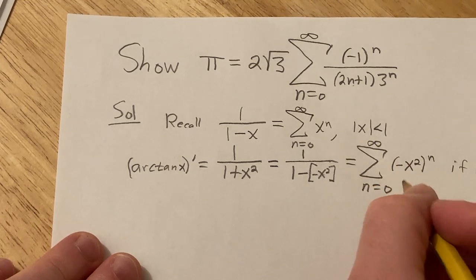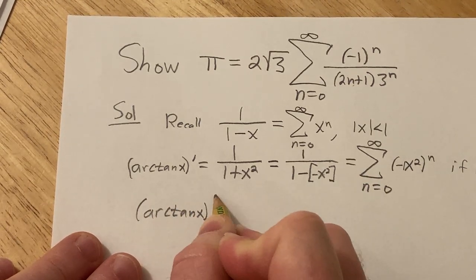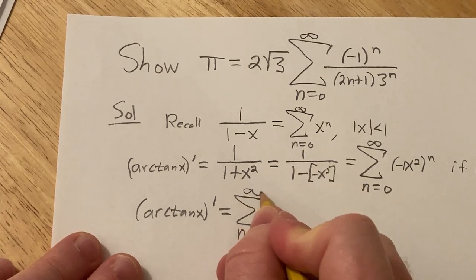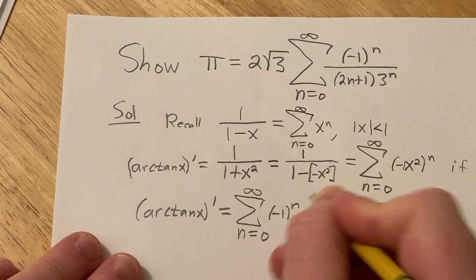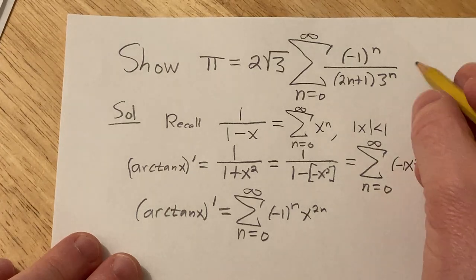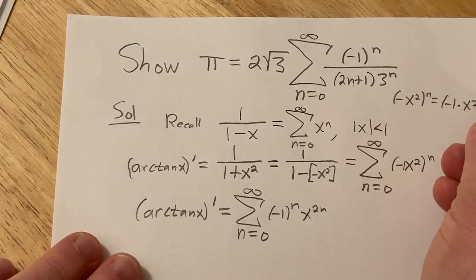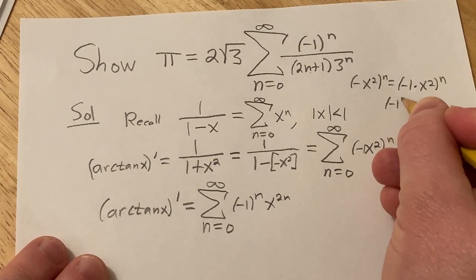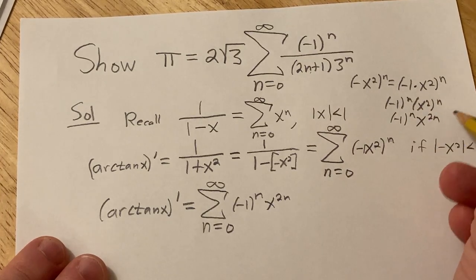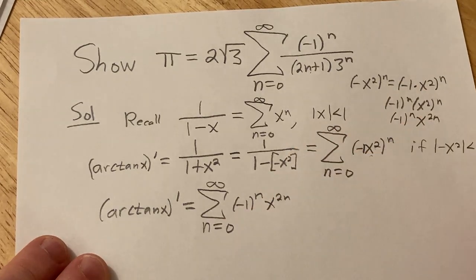So now we have this. The arc tangent prime of x is equal to the infinite sum as n runs from 0 to infinity of negative 1 to the n times x to the 2n. If that's confusing — if you have negative x squared to the n, that's really negative 1 times x squared to the n, which is negative 1 to the n times x squared to the n, which is negative 1 to the n times x to the 2n. Just some manipulation with exponents, and especially if you're used to working with series, you go from one step to the next.